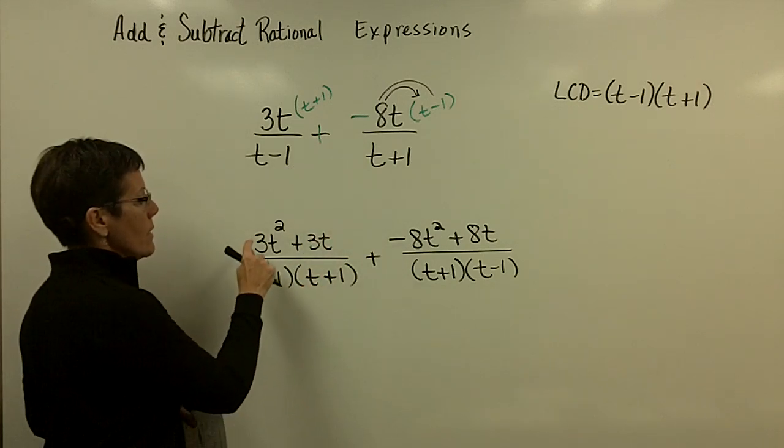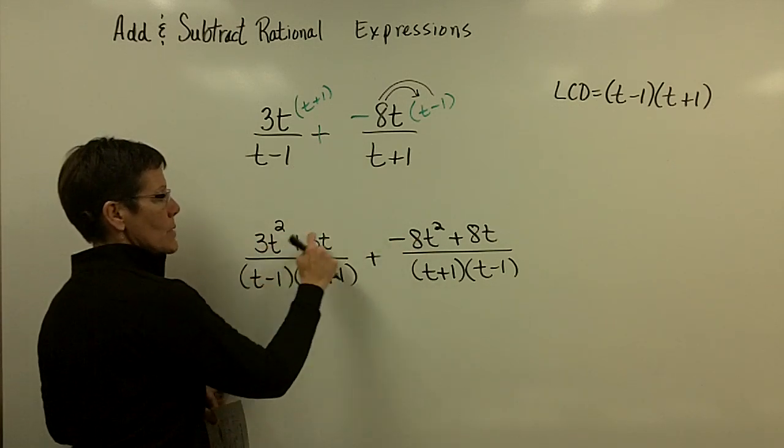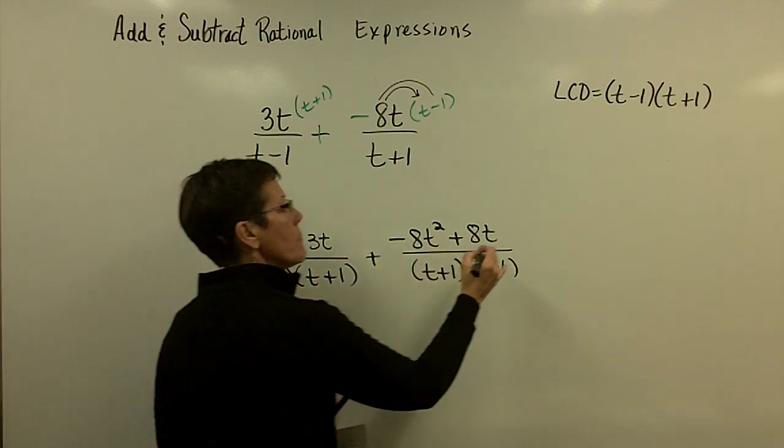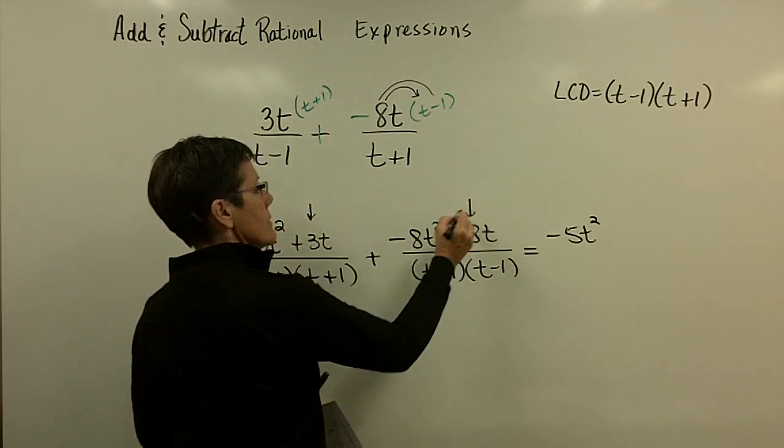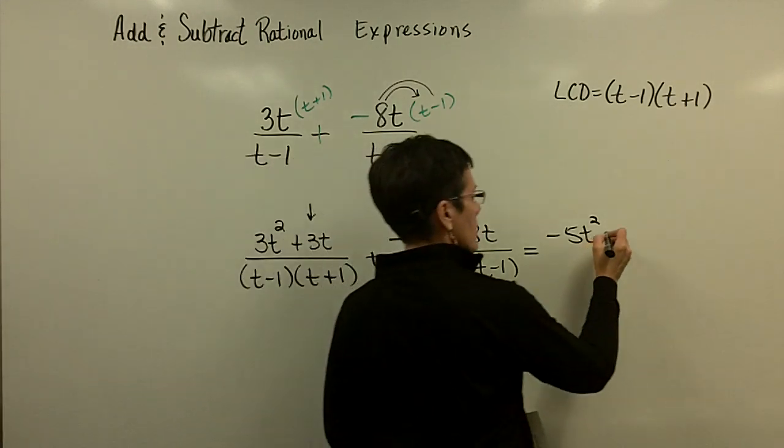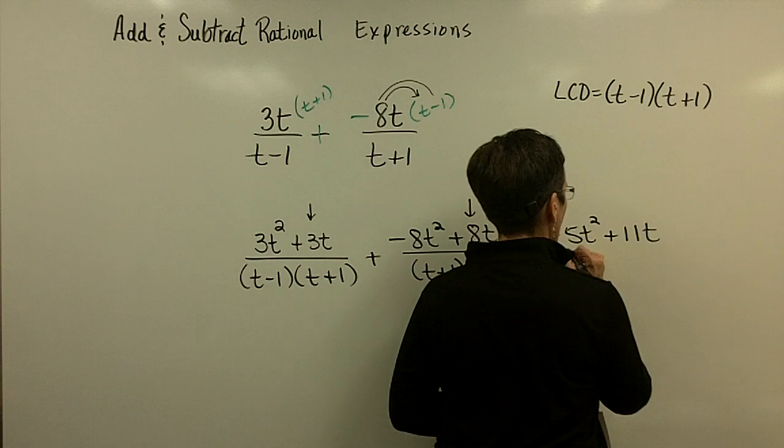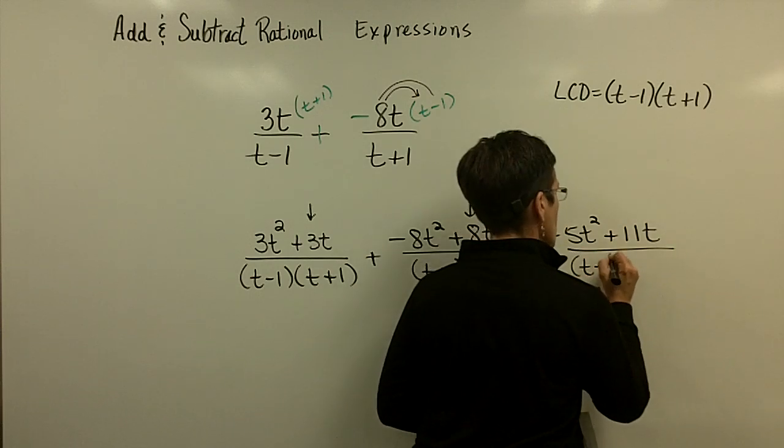And I got rid of my subtraction symbols, so I'm ready to add these, the like terms. The squared terms add to be a minus 5t squared, and then this 3t and 8t add to be 11t over the common denominator of t minus 1 and t plus 1.